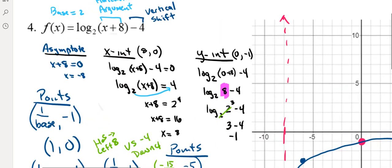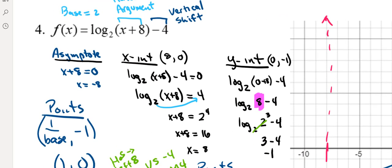So in the last video, we took a look at this function. Log base two of the argument x plus eight, and then minus four. So we got horizontal, vertical shifts, all sorts of stuff going on. So we're gonna take this, and we're gonna put it into Desmos, and I am gonna show you how to do that.